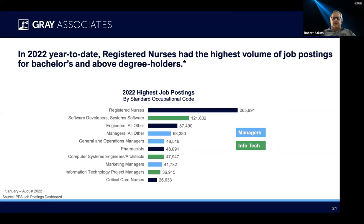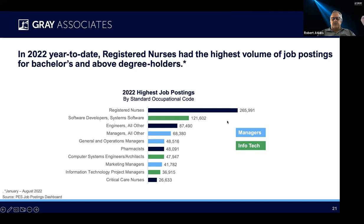What had the highest job postings? Nursing gets back to its number one spot. It is the occupation with the highest number of job postings. Then we see software developers, not surprising, engineers, managers — a handful of management jobs here — other general and operations managers, and then a little bit further down marketing managers and information technology managers, which I grouped under Infotech. And then you see Infotech's three of those on this list with software developers, computer systems architects, and Infotech project managers. And here's another big slug of nurses — 26,000 critical care nurses needed. So the shortage in nursing, I think, has really reached an acute level now. There are only a couple million nurses in the United States, and we've got a very substantial percentage of the total workforce that's now an open job position.